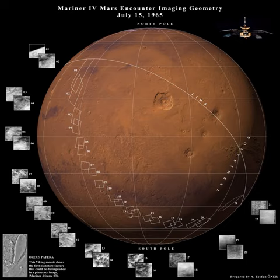Mars 6 and 7 were Mars landers carried by instrumented flyby buses. In the 21st century, Dawn had a closest approach of 549 km. Rosetta passed within 250 km, and Nozomi flew by at about 1,000 km.